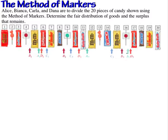In this video we're going to use the method of markers to find a fair distribution of goods. We have four players: Alice, Bianca, Carla, and Dana. They're going to divide 20 pieces of candy using the method of markers. The candy is laid out in an array — that's the first condition. You have to line up all the items as shown, and then each player places markers down.